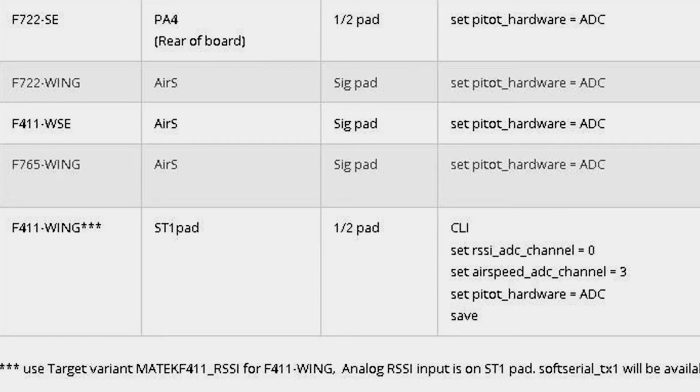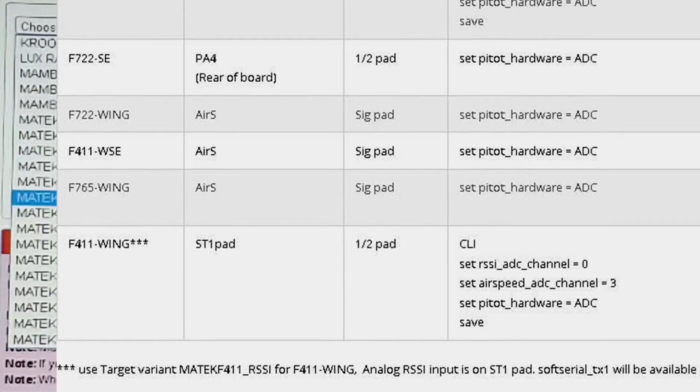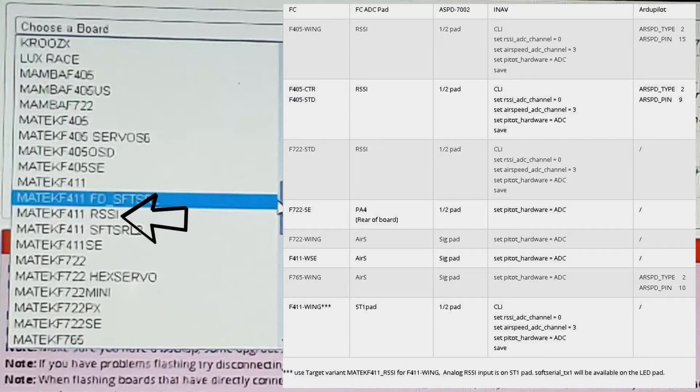This is the firmware you need to install to get this airspeed sensor working. You need to install the Matec F411 RSSI for F411 wing. As I've mentioned before, there's many different versions of the firmware you can install. I installed the wrong one, which is why I'm having problems in this video. Once I worked it out, you need the RSSI version of the firmware to get the airspeed sensor working correctly.